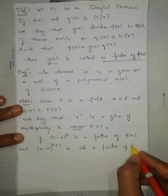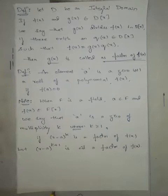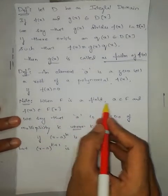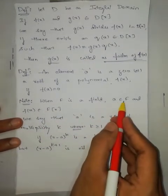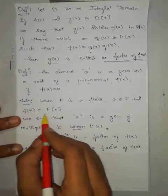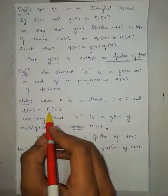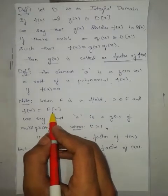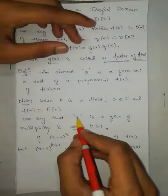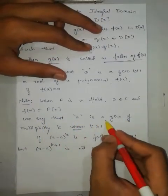What this note says: let F be a field, a is an element of F, and f(x) is a polynomial in polynomial ring F[x]. We say that a is a zero of multiplicity k.